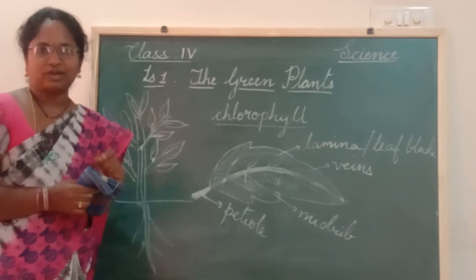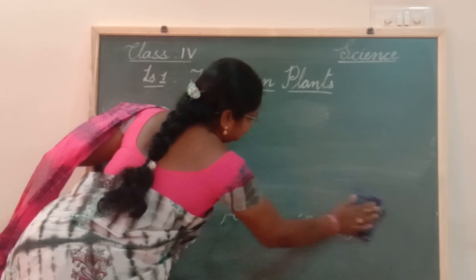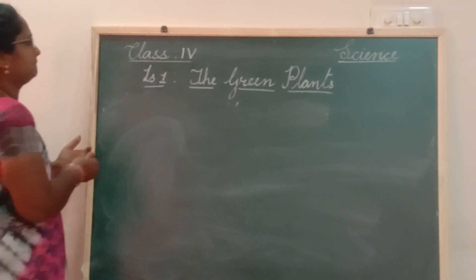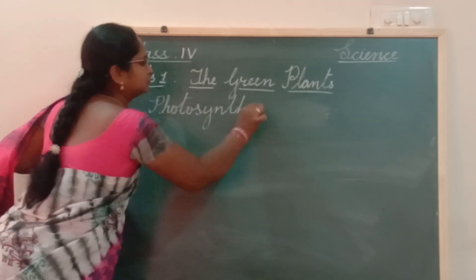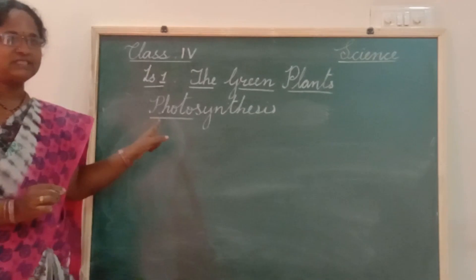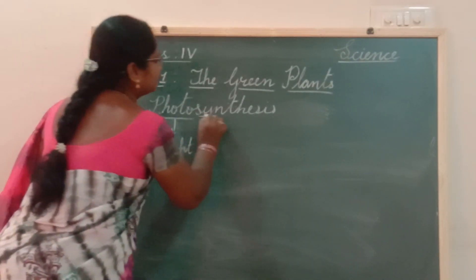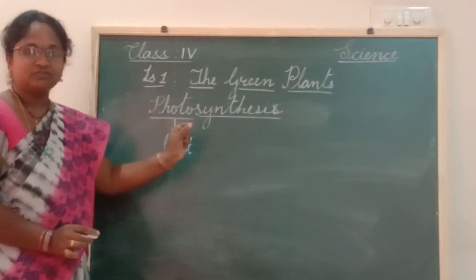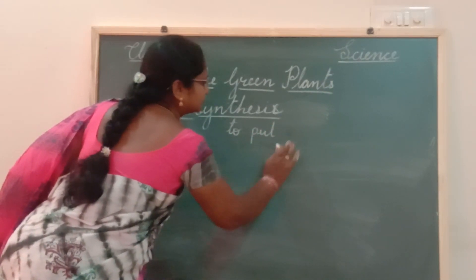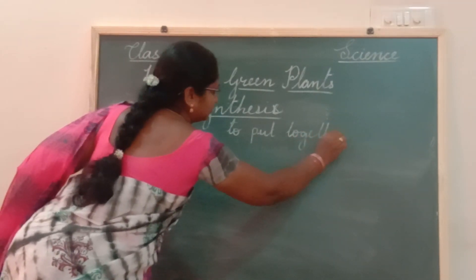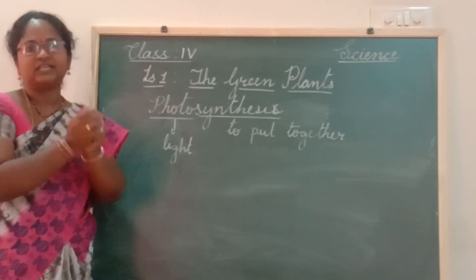Let us see what materials are required for photosynthesis and what are the end products. What is photosynthesis? Photo means light. Synthesis means to put together. So the leaf collects raw materials, puts them together, a reaction takes place, and the food is prepared.